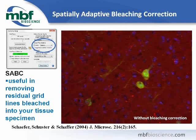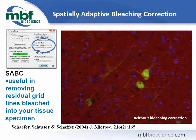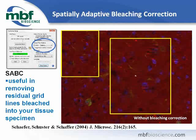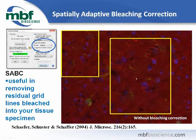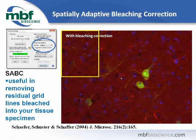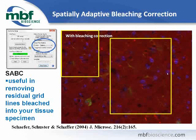I'd also like to mention the spatially adaptive bleaching correction (SABC) filter. This is particularly useful when you've been imaging a region for quite some time and grid lines have started to bleach into the tissue sample — you'll start getting residual grid lines in your final optical sections. Turn on the SABC filter, in this case we selected medium (there is also weak and strong). Recapture the image and you'll see a much smoother final optical section with no residual grid lines.